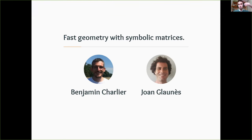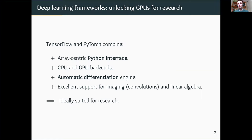This is work done with Benjamin Charlier from Montpellier and Joanne Glouness from University of Paris, both assistant professors. The state of the art today is that deep learning frameworks are awesome — over the last five years they've really unlocked GPUs for research. The two major ones are TensorFlow and PyTorch. They combine an array-centric Python interface, CPU and GPU backends, automatic differentiation, and excellent support for imaging operations like convolutions and linear algebra.